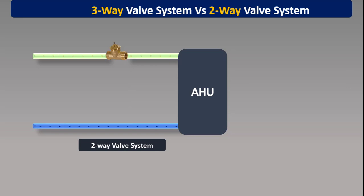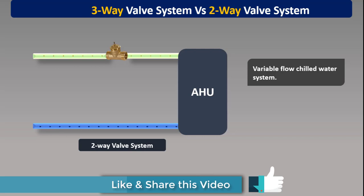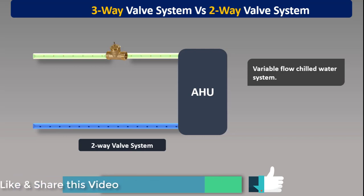In a two-way valve system, a two-port valve is used which has one inlet and one outlet. This system is a variable flow chilled water system. When a two-way valve is partially closed, this results in high pressure in the supply line. The BMS senses this increase in pressure and reduces the pump speed to achieve the desired pressure.